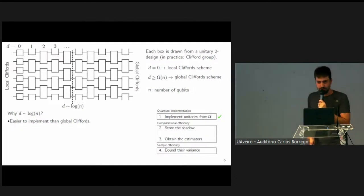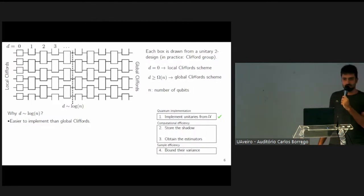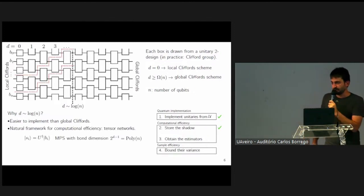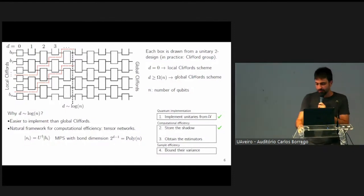First of all, this is easier to implement than global Cliffords, which in general require a depth which is linear in the system size rather than logarithmic. This takes care of the first point. Second, we have a natural framework for computational efficiency, which is given by tensor networks. In particular, the classical snapshot was a stabilizer state in the previous case, in the original classical shadows. Now we store it as a matrix product state of bond dimension polynomial in the system size. If you don't happen to know what a matrix product state is, just know that as long as this bond dimension number is small, this object can be manipulated efficiently on a classical computer.